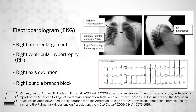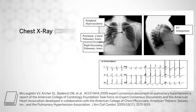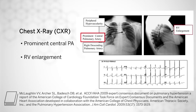On chest x-ray, you may see a prominent central pulmonary artery, RV enlargement, or peripheral hypovascularity, which is suggestive of vascular pruning — a potential finding seen in patients with underlying pulmonary hypertension.